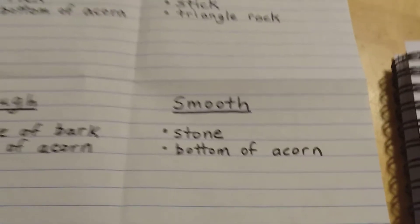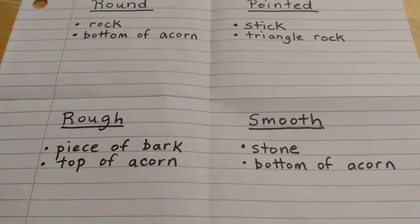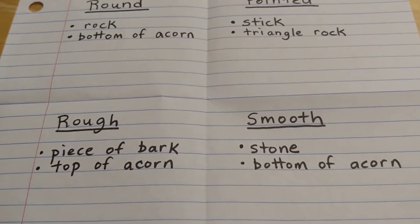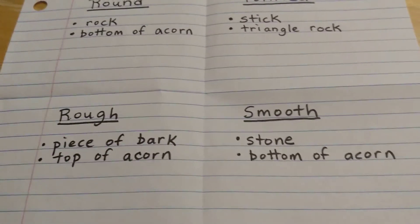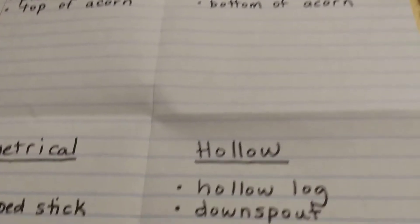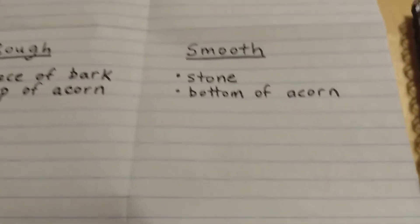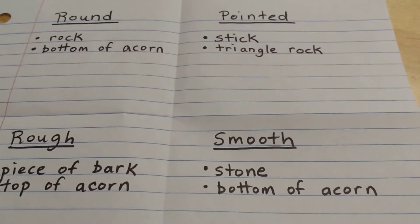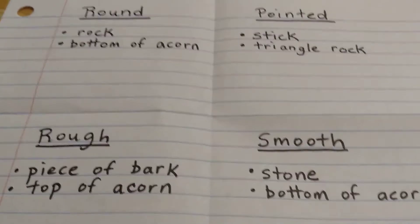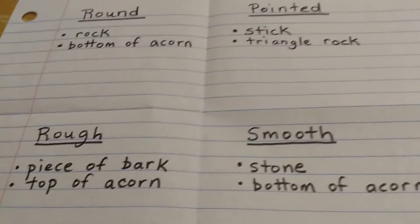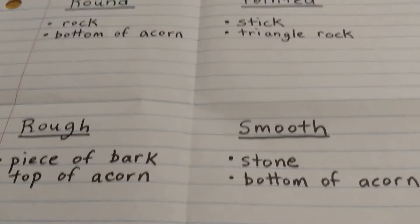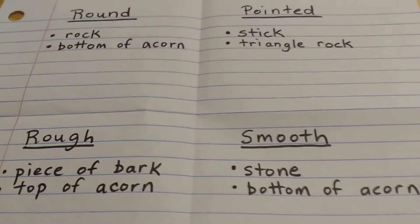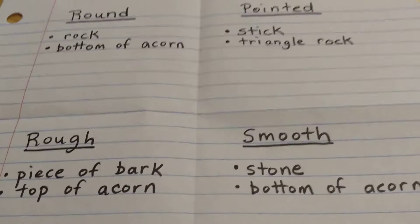So I'm going to keep going and keep thinking — what else do these things have in common? I have an acorn — wow, I have a lot of acorns here. The acorn is so interesting. What I'm realizing is I have a lot of overlap: under the category of round I have the bottom of an acorn, under rough I have the top of an acorn, under smooth I have the bottom again. Acorns are round and smooth and rough — I find that kind of interesting. I'm just going to write that down.